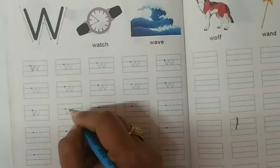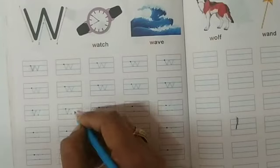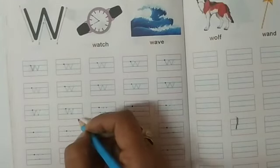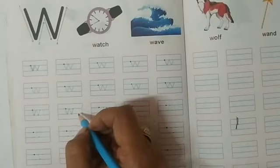Now, again, make a slanting line downward. Then, go to the top. This is W. Small w.